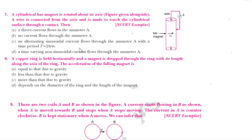Option C says an alternating sinusoidal current flows through ammeter A with time period T = 2π/ω. Option D says a time-varying non-sinusoidal current flows. Apart from option B, everything is saying current is flowing through the ammeter — either direct, sinusoidal, or non-sinusoidal.